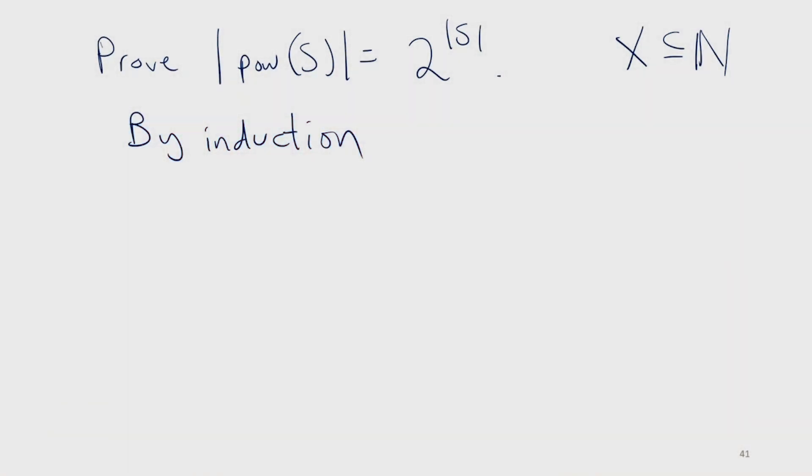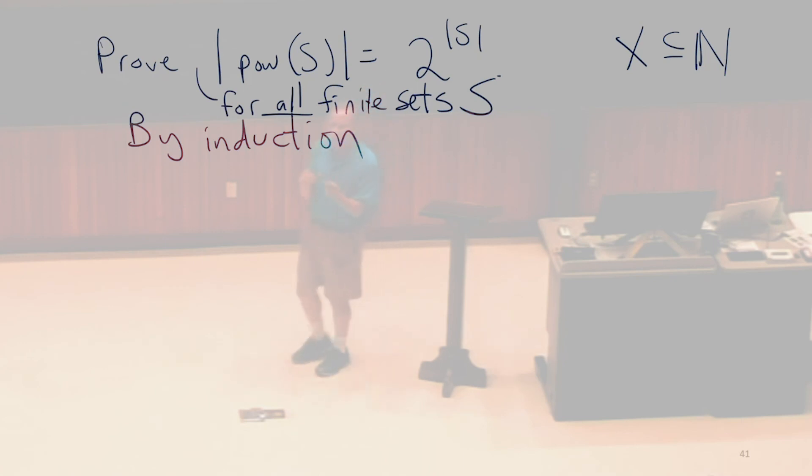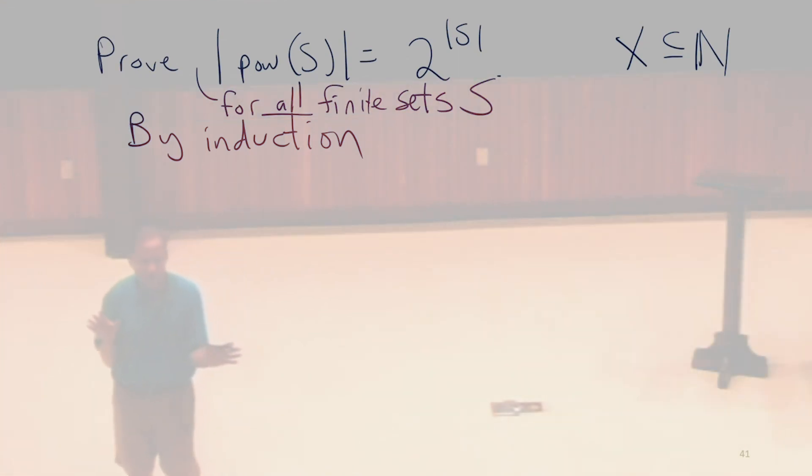But the sets that we're proving it on, we want to prove it for all finite sets. Because the finite sets are countable, in this case, these are sets where the elements don't matter. All that matters is how many elements there are.